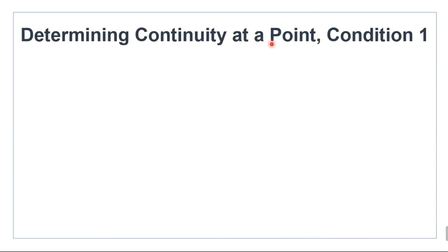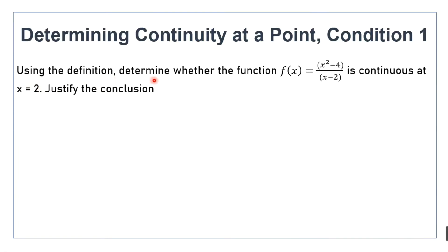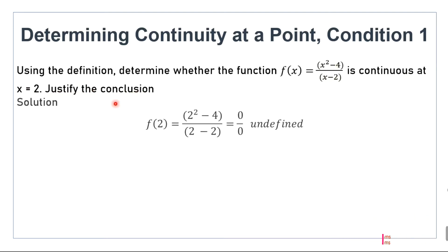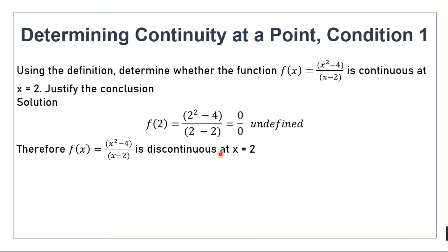Determining continuity at a point using condition one. Using the definition, determine whether the function f(x) = (x² - 4)/(x - 2) is continuous at x = 2. We calculate the value of the function at x = 2. After substituting, we get 0/0, which is undefined. Therefore the function is discontinuous at x = 2.